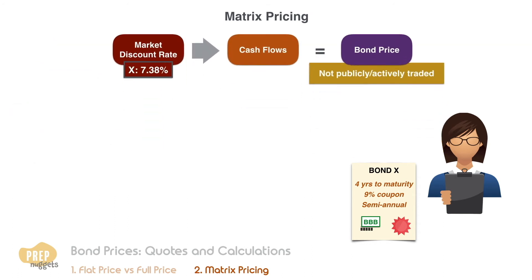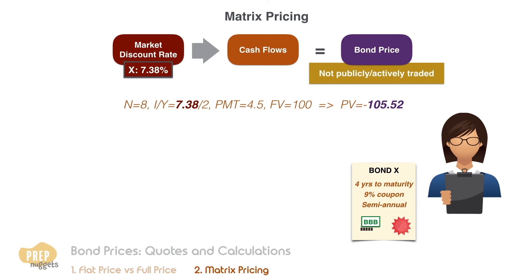The number of periods is 8, as there are 8 more half-year periods to maturity. Interest per period is half the market discount rate we've estimated. Payment is 4.5, which is half of the 9% coupon rate, and FV is the par value of 100. Solving for PV, we get minus 105.52. So according to the analyst, this non-publicly traded bond is valued at 105.52 using the matrix pricing method.